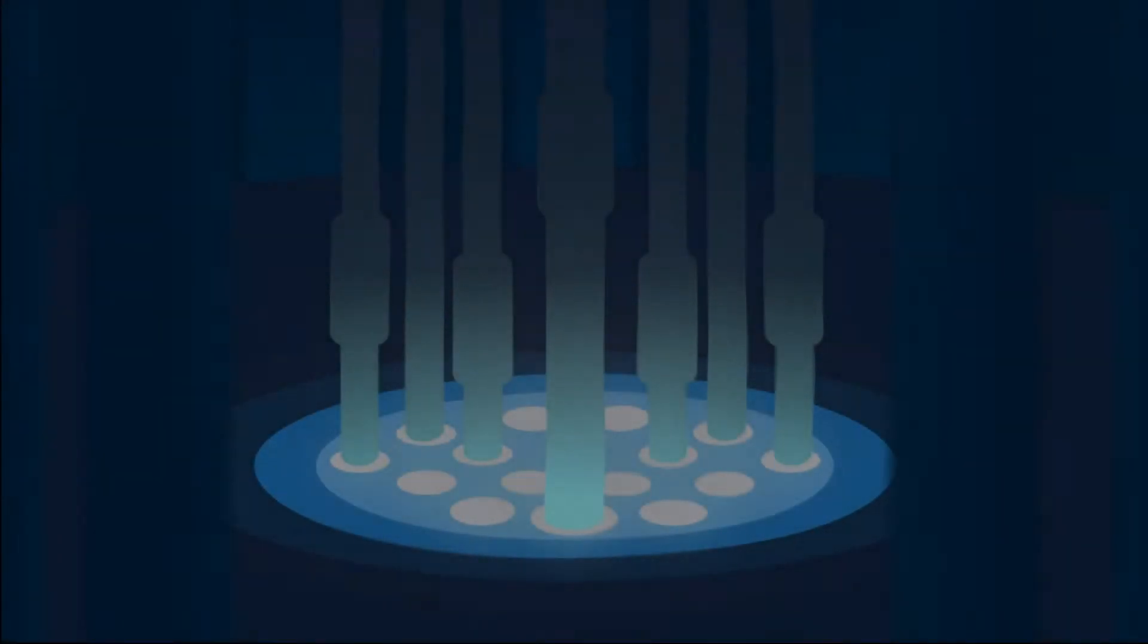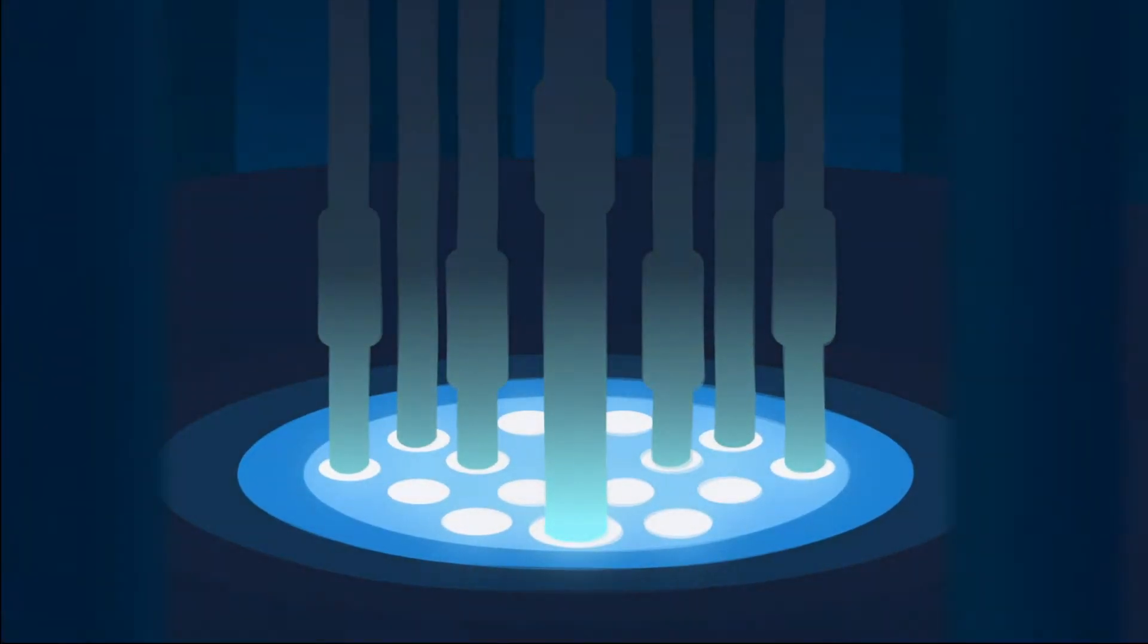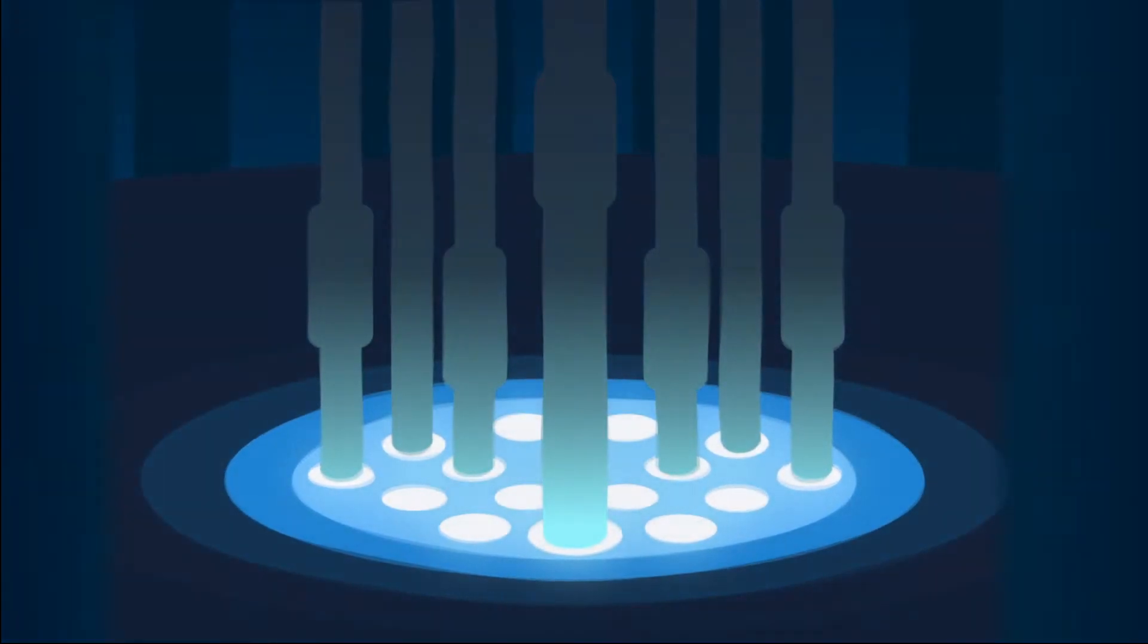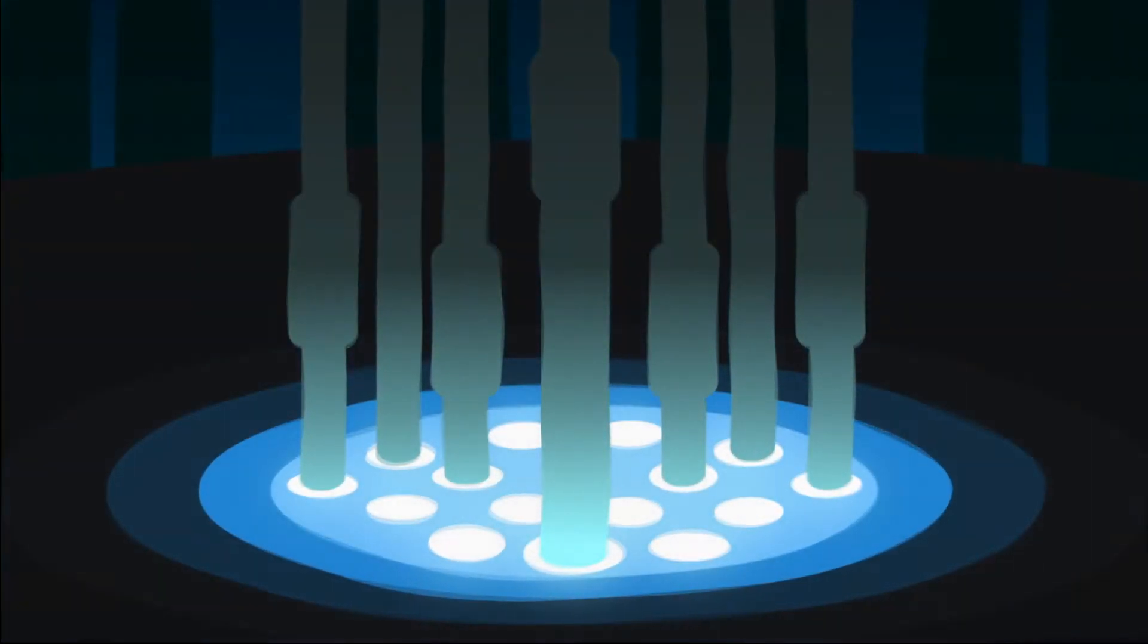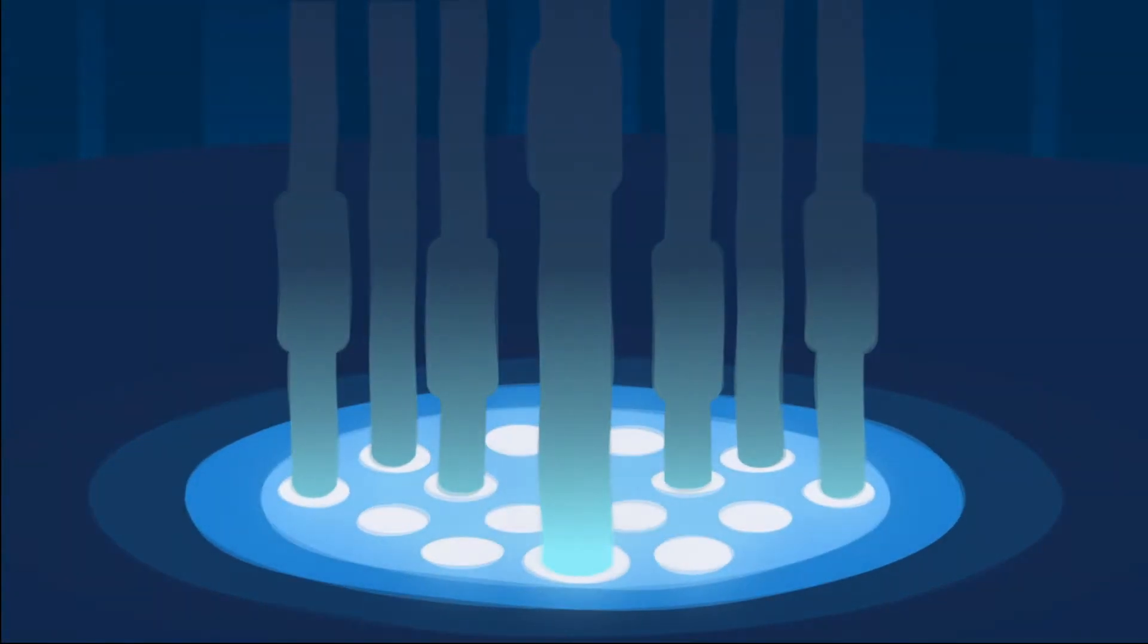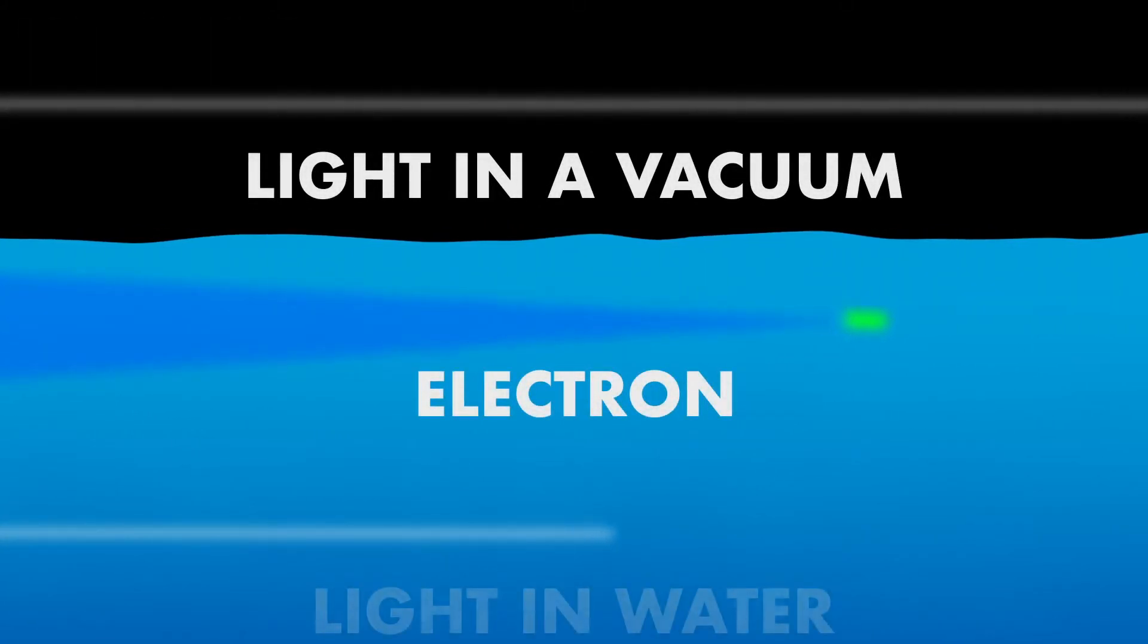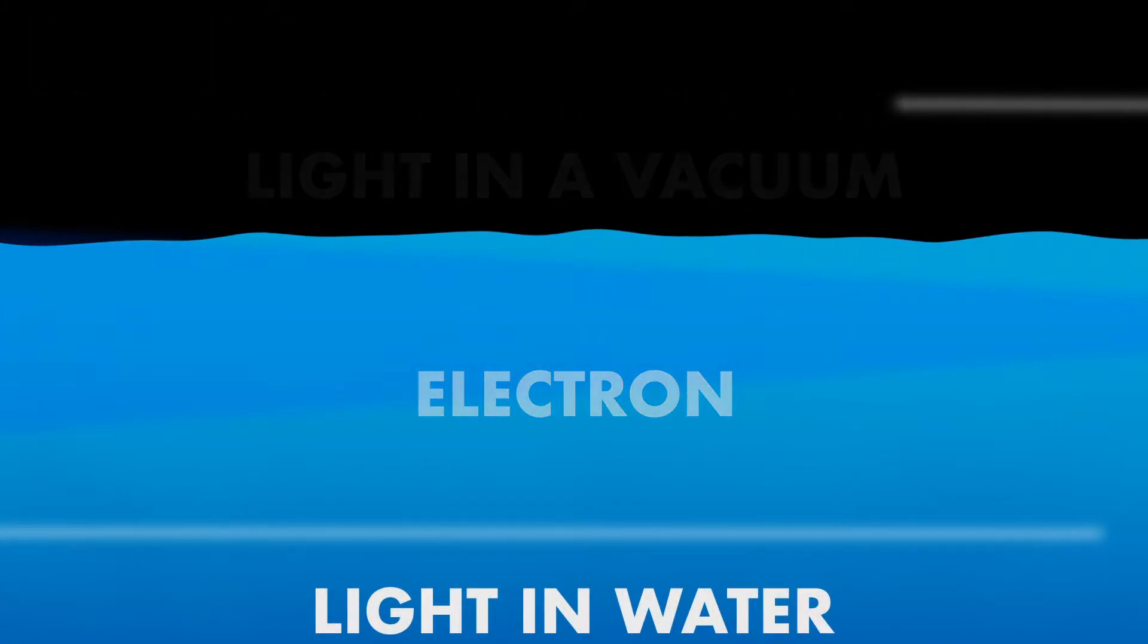If you've ever seen the blue glow of a nuclear reactor's cooling pool, that's Cherenkov radiation. It's caused when the particles exceed the speed of light in the water. And while you may know that nothing can go faster than the speed of light, that's only true in a vacuum. When light travels through materials, its speed is reduced, and very high energy particles can exceed that velocity, causing the optical equivalent of a sonic boom.